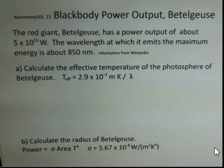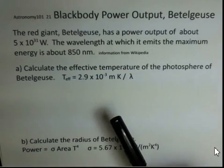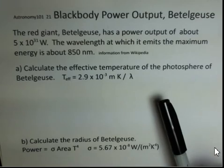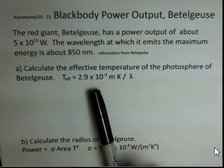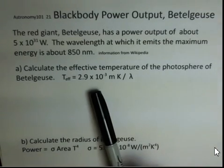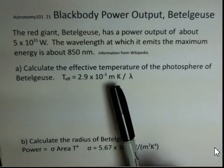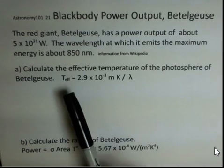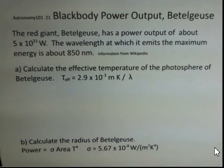We're going to use this information in two ways. I'm going to calculate the effective temperature for Betelgeuse using Wien's law. 2.9 times 10 to the minus 3 meters times kelvins divided by wavelength in meters will give us the effective temperature in kelvins.